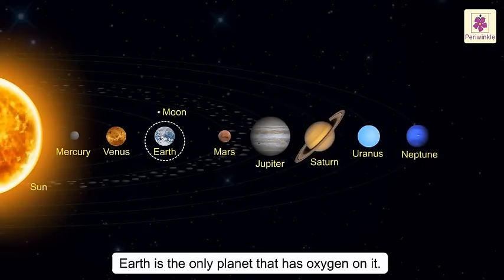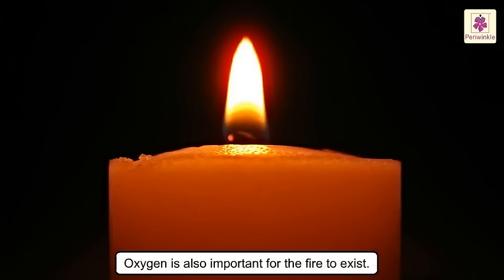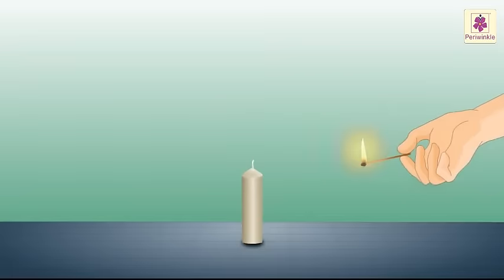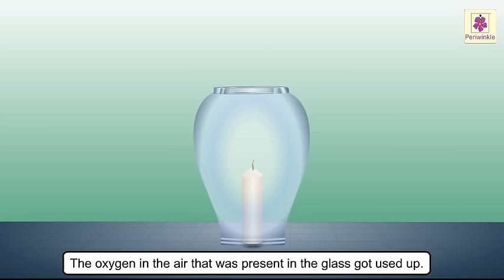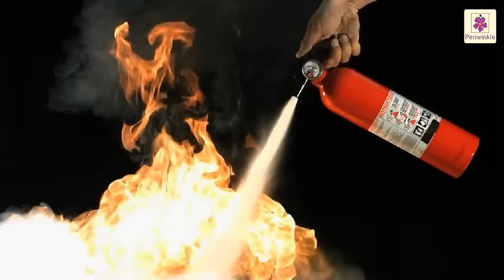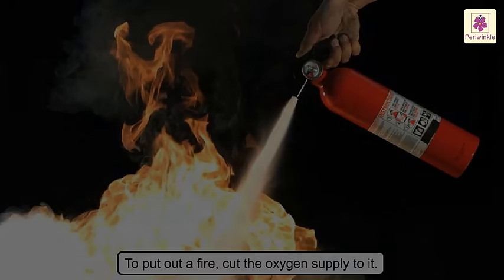Earth is the only planet in our solar system that has oxygen on it. Oxygen is also important for fire to exist. Let us see that by an activity — light a candle and cover it with a glass. You will see that even without blowing it, the flame goes out after some time, because the oxygen in the air inside the glass got used up. Thus, air is required for burning, so if we have to put out a fire, we cut the oxygen supply to it.